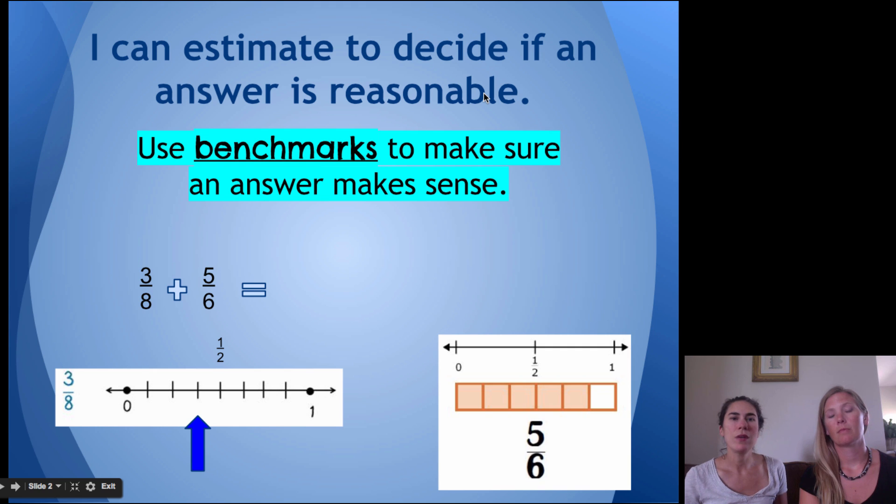So the first way that you can estimate an answer is to use benchmarks. Now, what we mean by benchmarks are, when you think of fractions, a lot of times, of course, we know the value of zero. We know the value of one. And most of us, I think, feel pretty confident about one-half as well. Even almost a fourth and three-fourths would be close. But the ones we'll deal with are one, one-half, and zero.